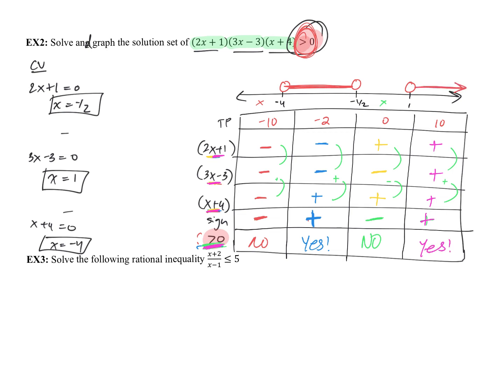Answering in interval notation: the solution is negative 4 to negative one half, open interval, union 1 to infinity. If you're having trouble with interval notation, please stop by office hours and we can go over that.